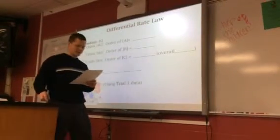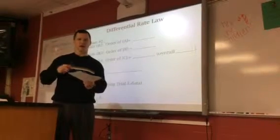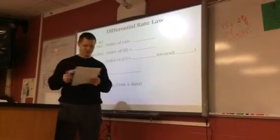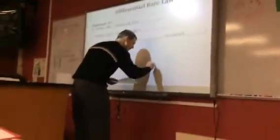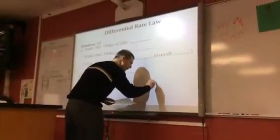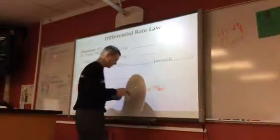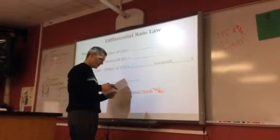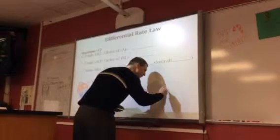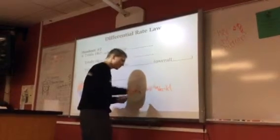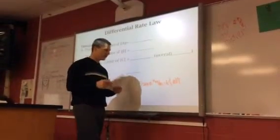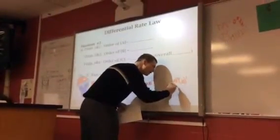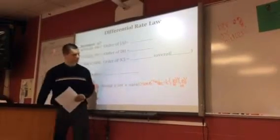Using trial one, and the reason I chose trial one is the numbers are the simplest. We have 0.1 for all the concentrations, and just look for the one that's the simplest. So, the rate, which is 2.5 times 10 to the negative 4th, remember that's the measure of molarity per second, equals K times concentration of A to the second power. B to the zero power, so I'm just going to leave that out, and then 0.1 for C to the first power. And this is in molarity, this is in molarity.